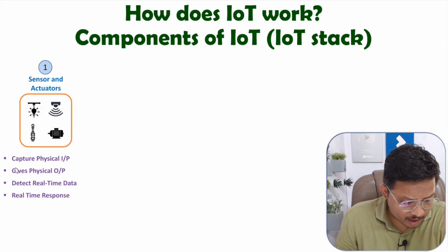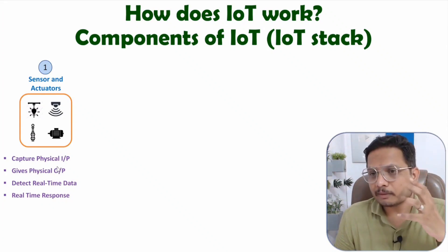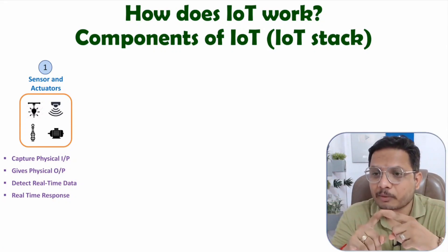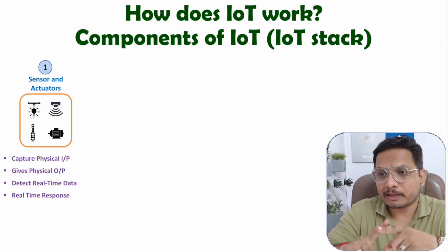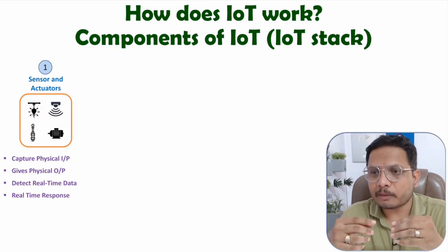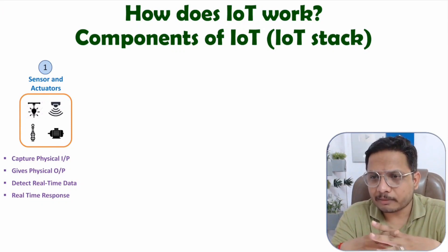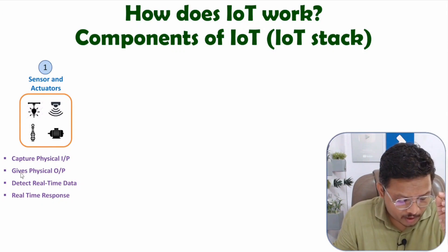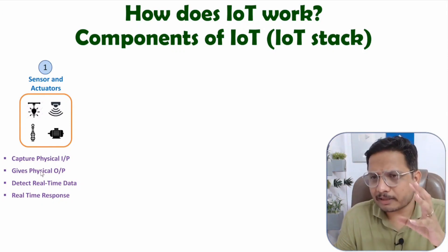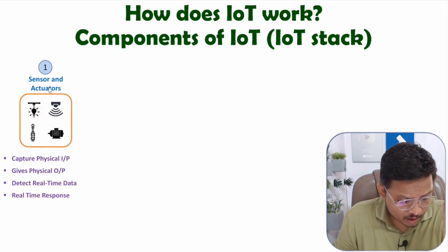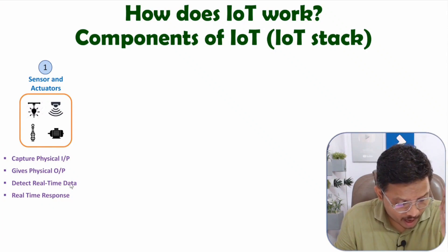Actuators are used to provide physical output. For example, we can use an LED as an actuator — it will indicate whether something is happening or is off. Similarly, you can also use a motor as an actuator; you can turn the motor on as needed. In an IoT system, you will have real-time applications where sensors detect real-time data and actuators provide real-time responses.